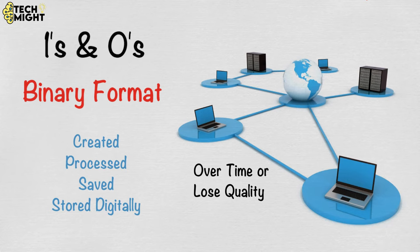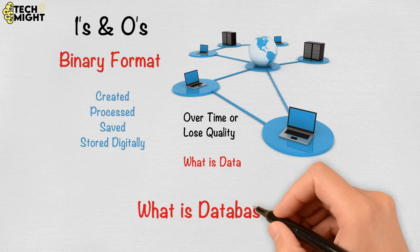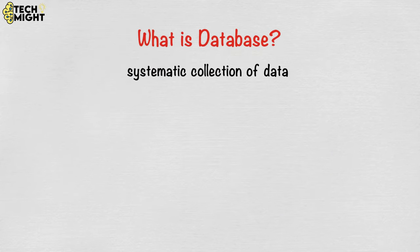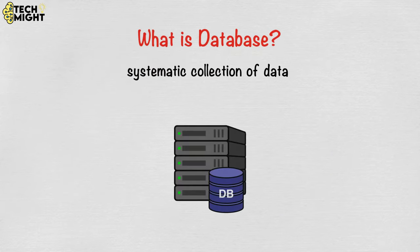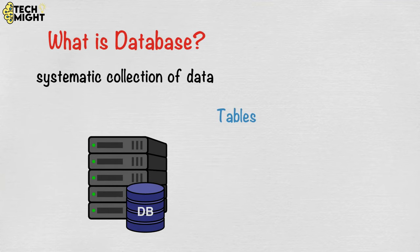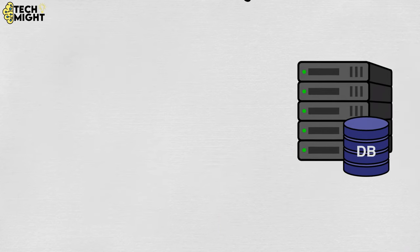Now we will move on to what is a database. A database is a systematic collection of data — they support electronic storage and manipulation of data, and databases make data management easy. You can organize data into tables, rows, columns, and index it to make it easier to find relevant information.